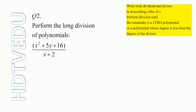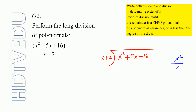Question number 2: x squared plus 5x plus 16 divided by x plus 2. What is the leading term of the dividend? It is x squared. What is the leading term of the divisor? x. So leading term of the dividend divided by leading term of the divisor — and that is just x. That is what we put here. And then x times x plus 2 is x squared plus 2x.